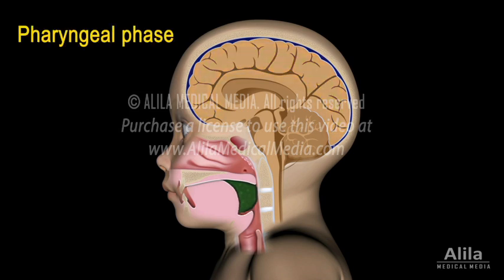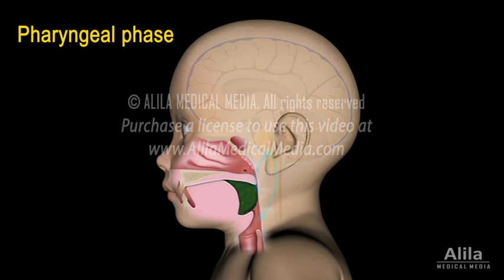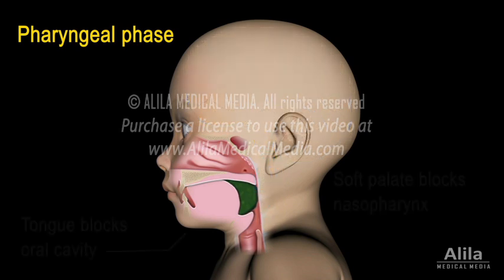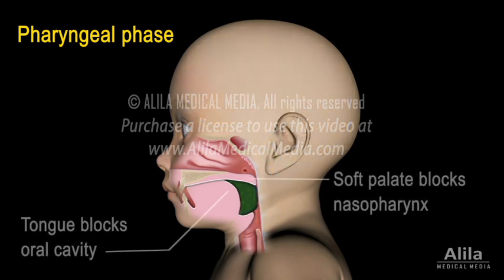The pharyngeal phase starts with the stimulation of tactile receptors in the oropharynx by the food bolus. The swallow reflex is initiated and is under involuntary neuromuscular control. The following actions are taken to ensure the passage of food or drink into the esophagus.